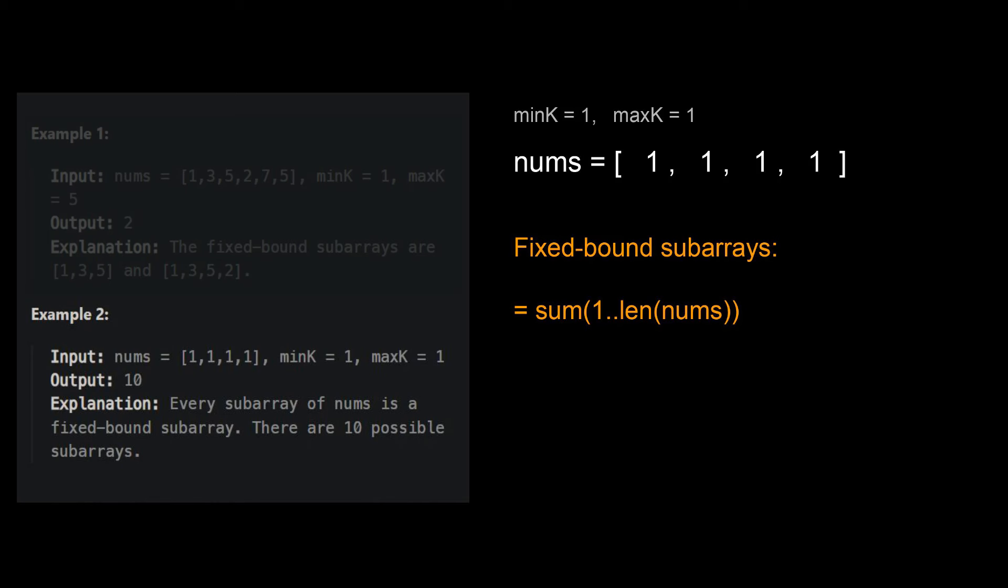More generally, for the special case where min k equals to max k and nums is just a sequence of min k or max k, then the number of fixed bound subarrays is equal to 1 plus 2 plus 3 plus 4 all the way to the length of nums. This can be calculated using the standard sum of arithmetic progression formula n times n plus 1 divided by 2. In this case, n is 4 and output is 10.